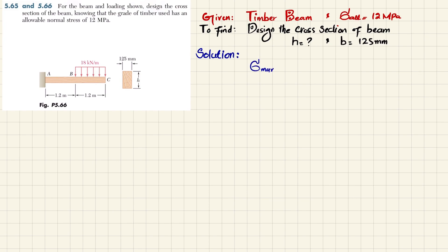The maximum allowable bending stress equals the maximum bending moment divided by the section modulus. The section modulus for a rectangular cross section is S = (1/6) b h². We do not yet have the maximum bending moment, so we will first find it using the shear force and bending moment diagram.